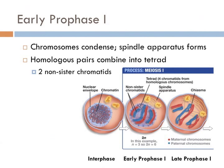Also at this time, the homologous pairs come together. The structure that results is known as a tetrad, which consists of two homologous chromosomes attached to each other. The chromatids from different homologous pairs are known as non-sister chromatids — shown as red and blue, one from the father and the other from the mother. All four chromosomes combine in one tetrad: two from the mother and two from the father.